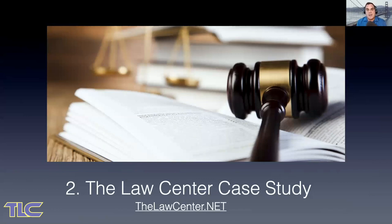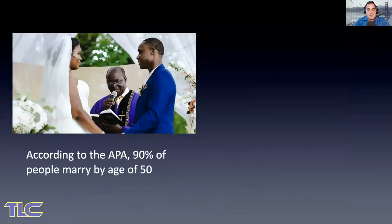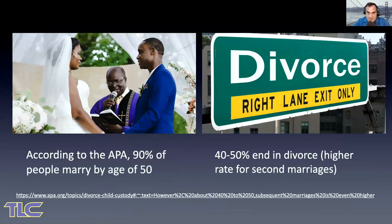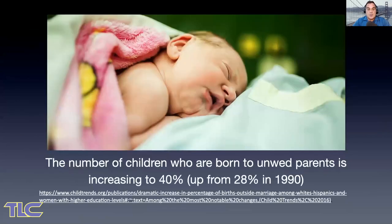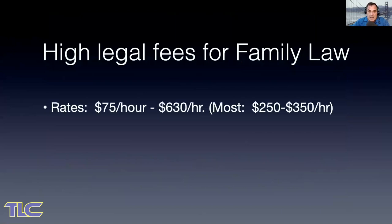Part two: the Law Center case study. I created a free library of online resources for self-represented family law litigants, because I went through a custody battle myself and understand the extreme costs. According to the American Psychological Association, 90% of people marry by the age of 50, and almost half of them get divorced. 40% of children are born to unmarried parents.